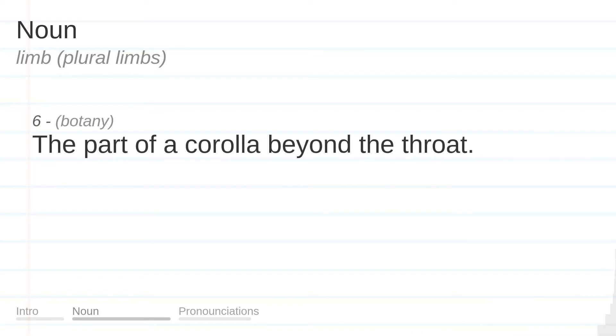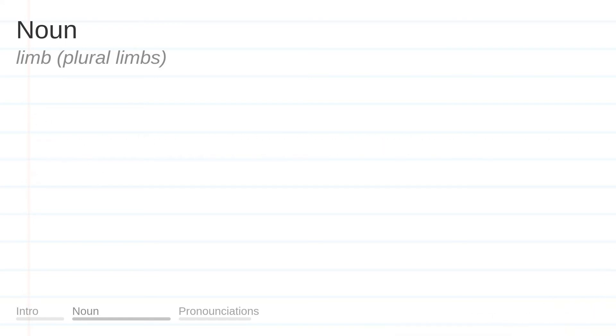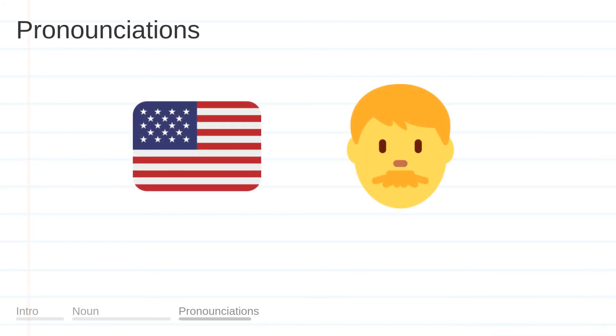The part of a corolla beyond the throat. Short for 'limb of Satan': a wicked or mischievous child. Limb.